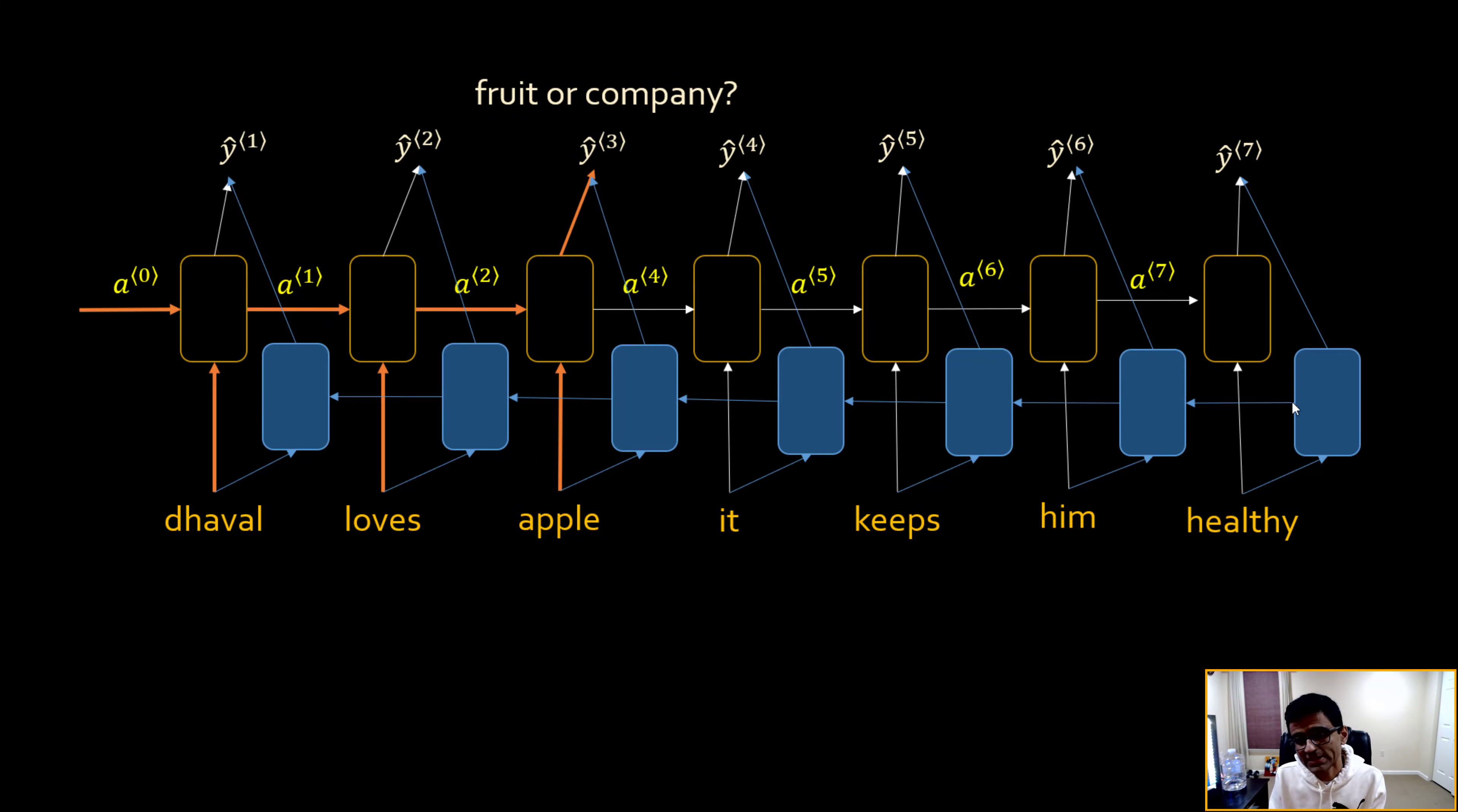So now what happens is when I decide whether Apple is a fruit or a company, the output y3 hat, that output is a function of a1 and a2. So basically you have the influence of the previous words on your y3 hat. But watch this blue line. Because of this line, now you have influence of your future words as well. So 'it keeps him healthy,' that sentence will have an impact through this direction, the direction that goes from right to left. You get all the activation results and these results feed through this particular arrow and you can make a decision.